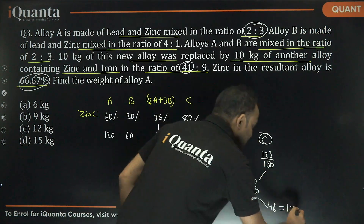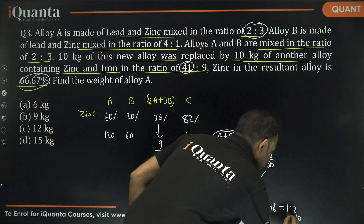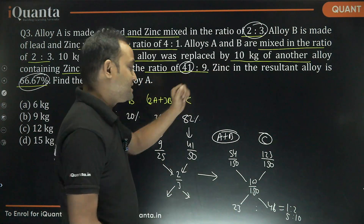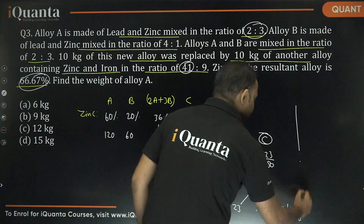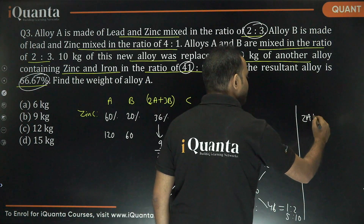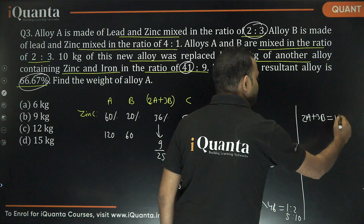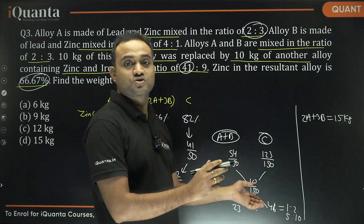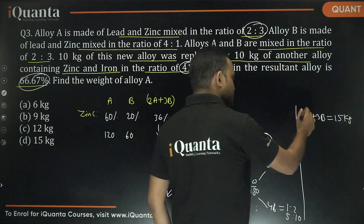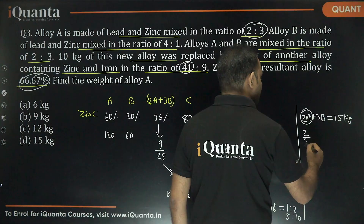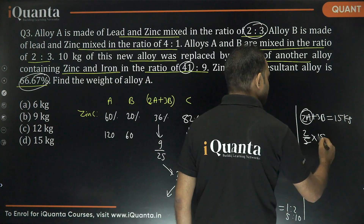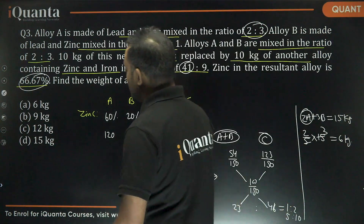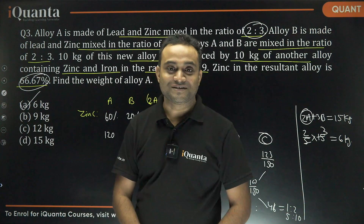Alloy C was 10 kg, and the ratio of A+B to C is 1 to 2, so the A+B portion was 5 kg. But this 5 kg is what remained after removing 10 kg, so the original 2A+3B mixture was 15 kg. Since A and B are mixed in ratio 2 to 3, alloy A is 2 out of 5 of 15, which equals 6 kg. The answer is option A.